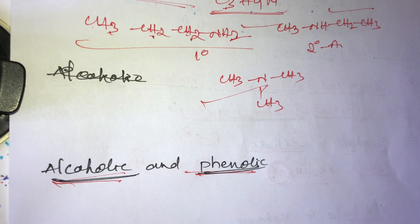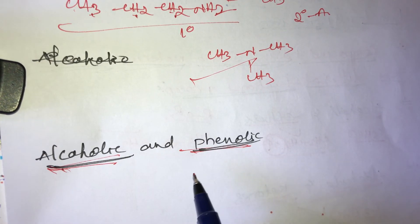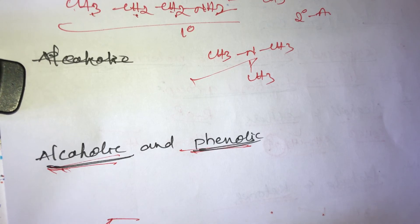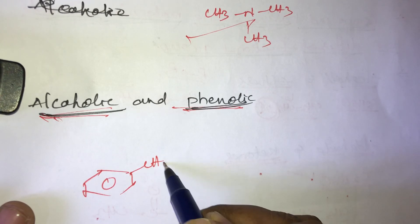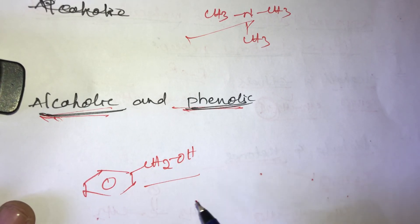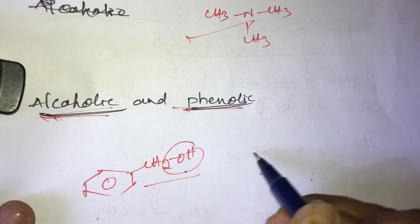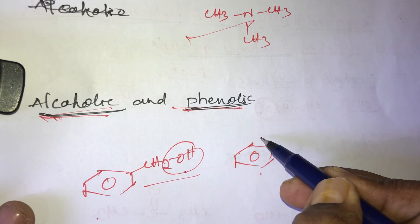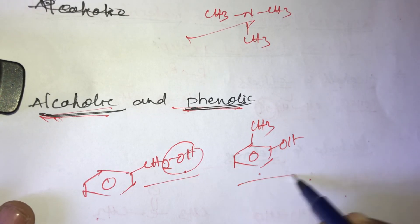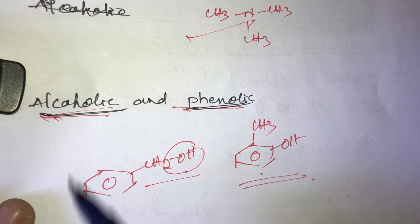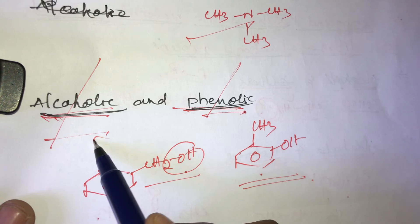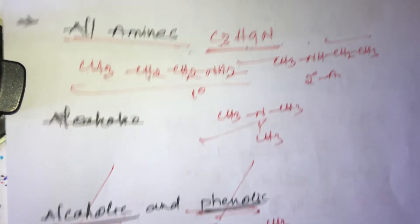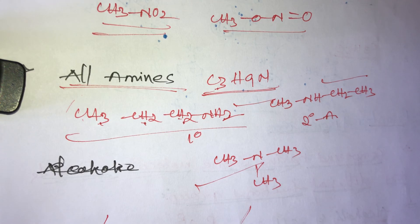Another example is alcoholic and phenolic groups. Alcoholic and phenolic compounds also have the same molecular formula. For example, benzyl alcohol (C6H5CH2OH) is an alcoholic group, and cresol (CH3C6H4OH) is a phenolic group — both have the same molecular formula, making them functional isomers.